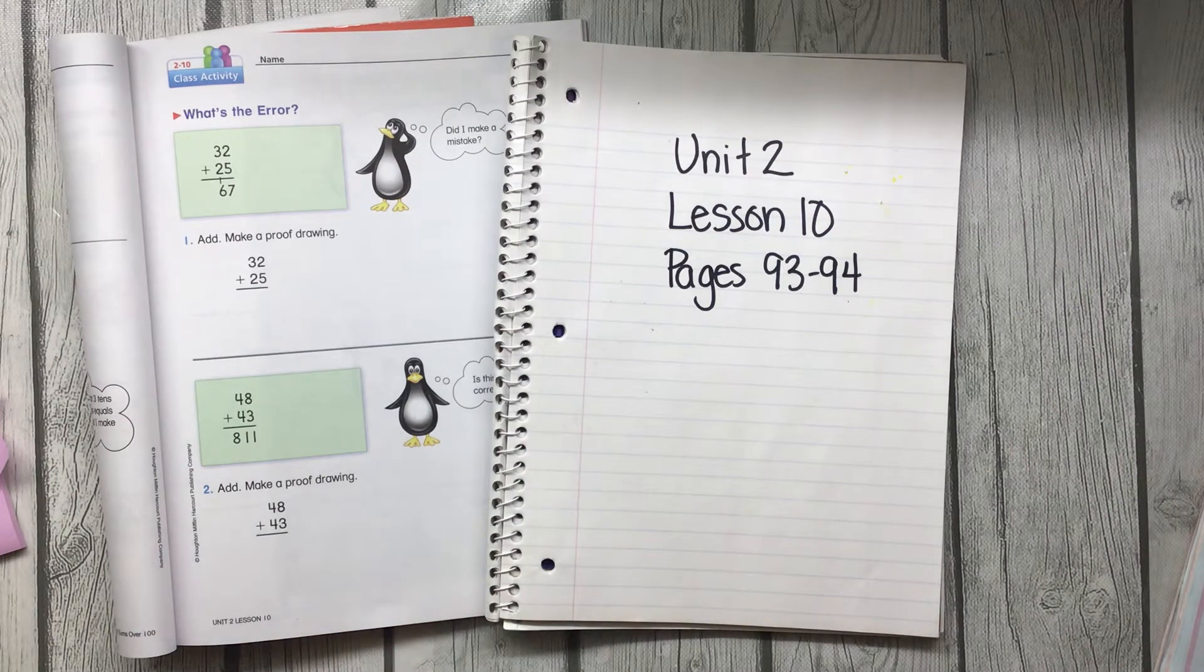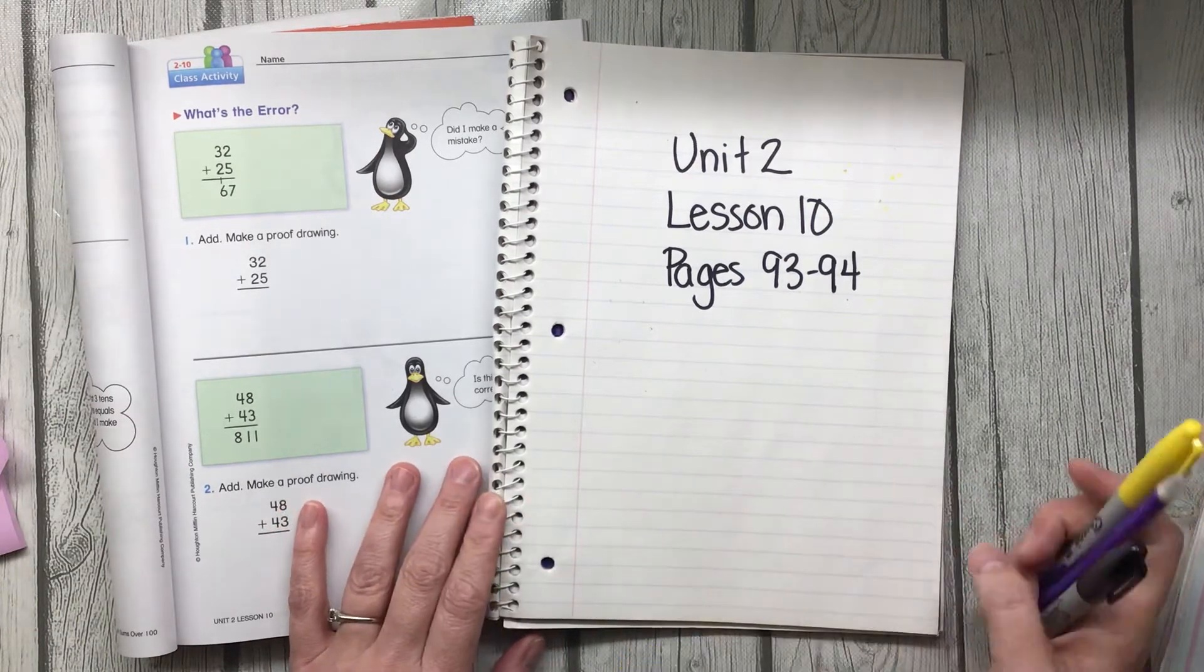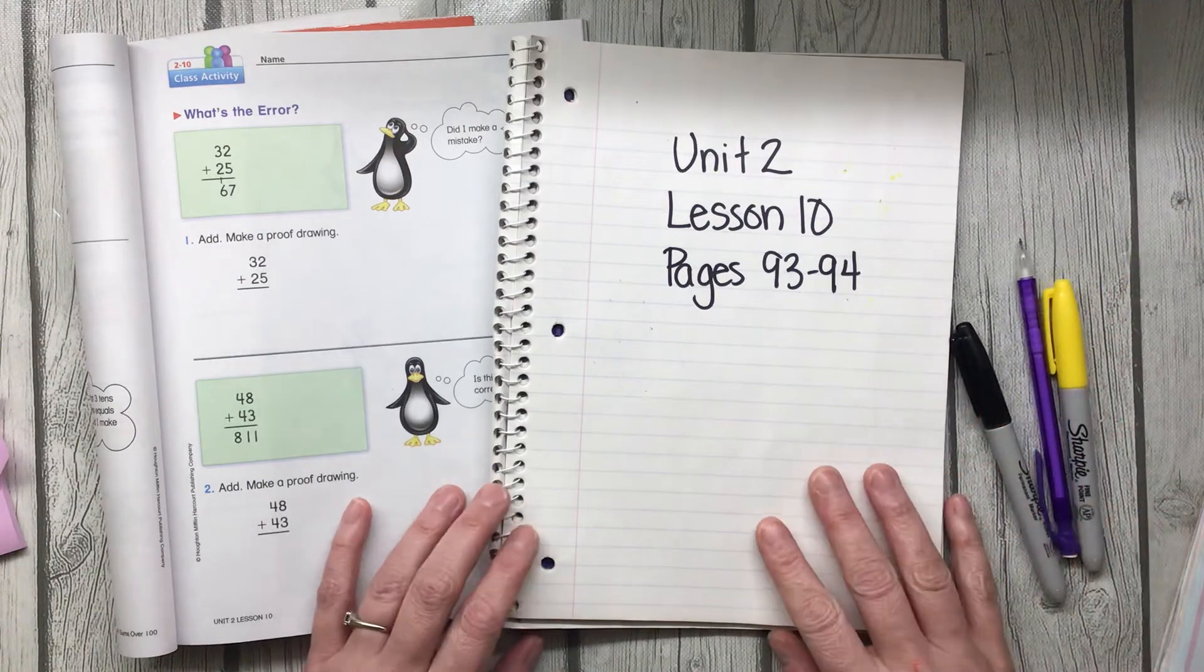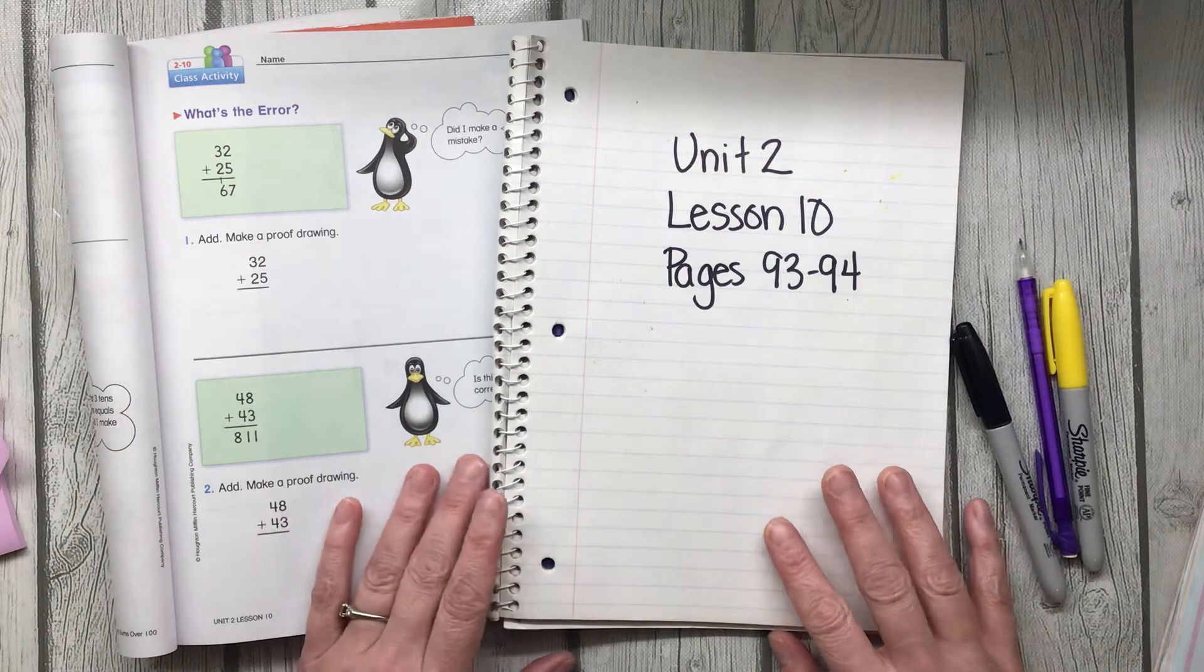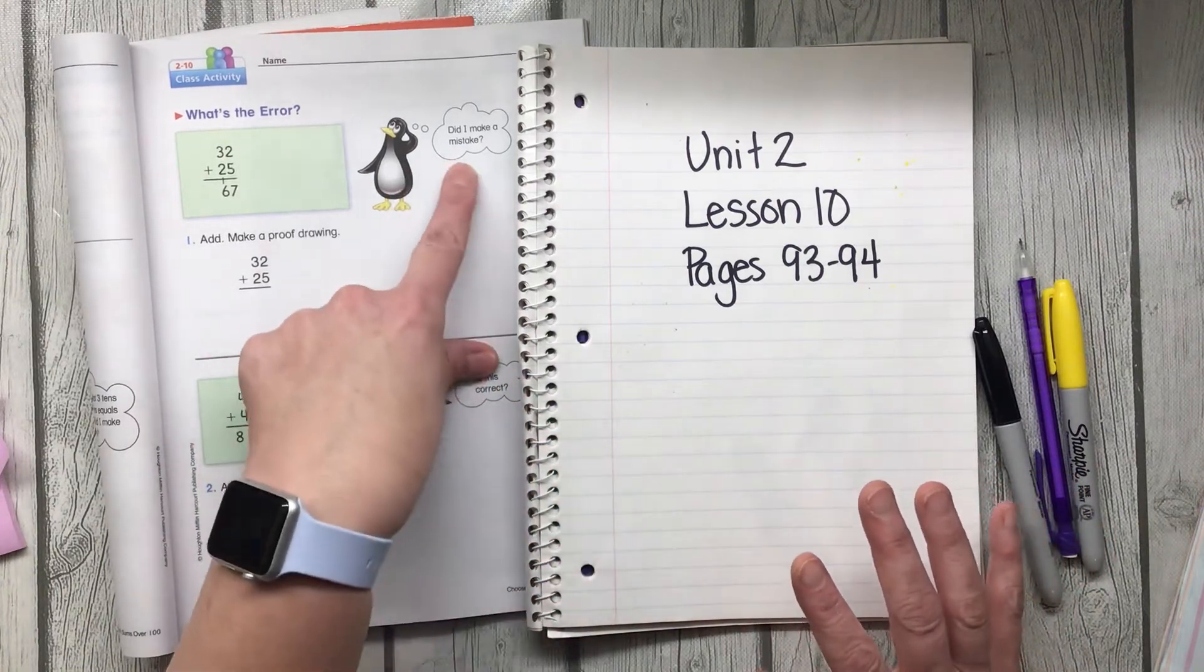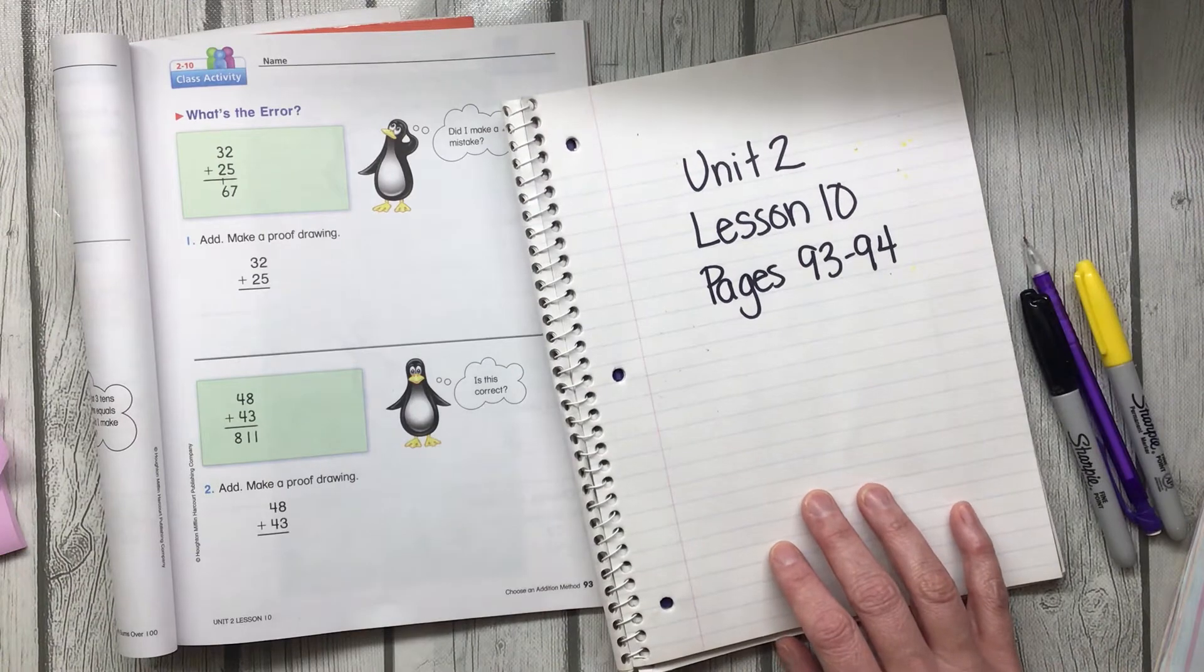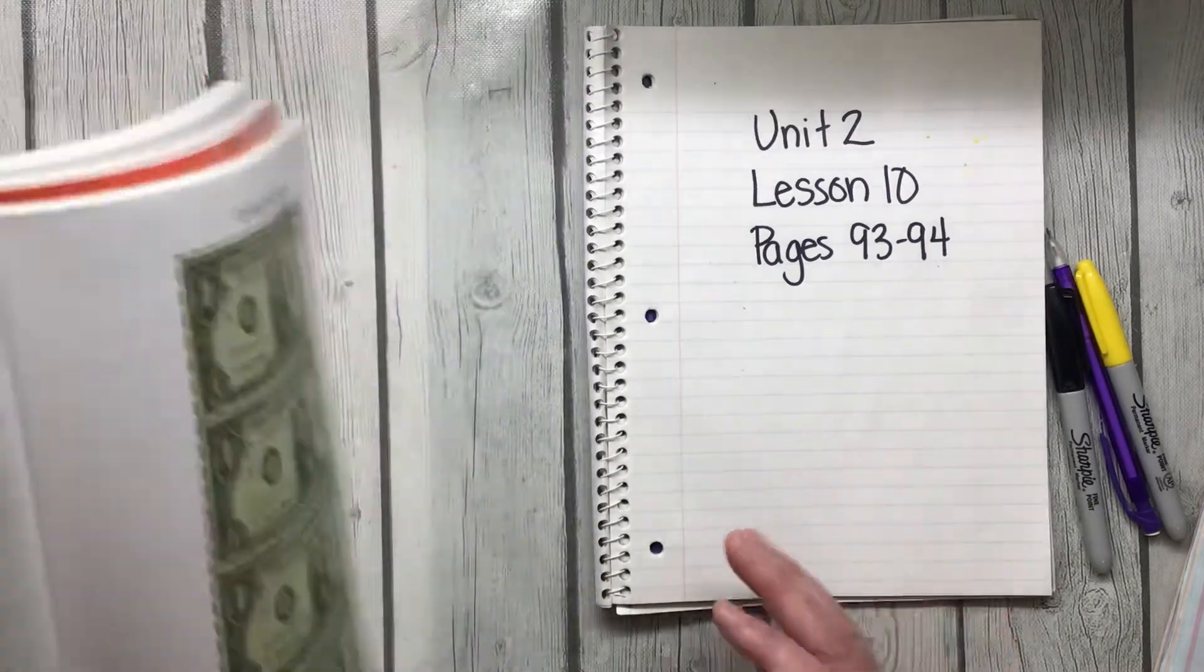So today's going to be a little bit different. Usually we have a video that we're going to do with our lesson, but I'm just kind of making this video today so that if anybody's absent they can still check in and see the video. But we are going to solve these, make a proof drawing, and then we're going to go to breakout rooms to talk about his mistakes. He always makes mistakes, you guys. If a Puzzled Penguin has done an equation, he has made a mistake.